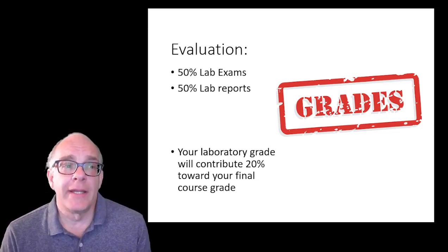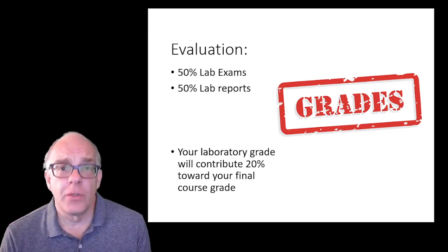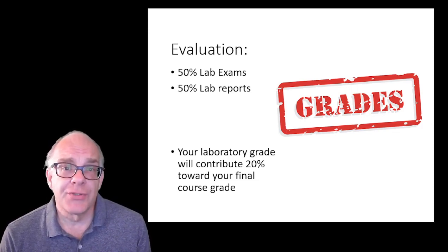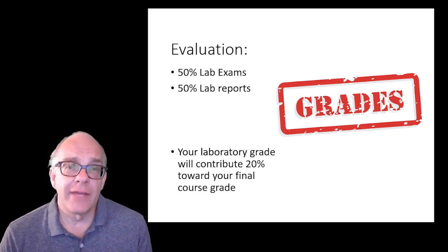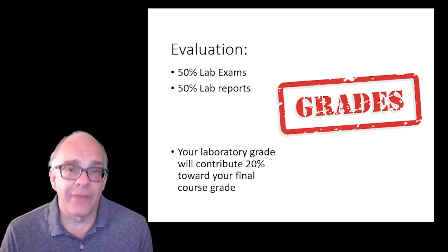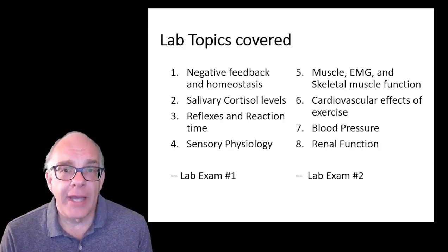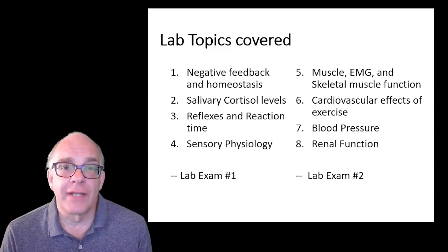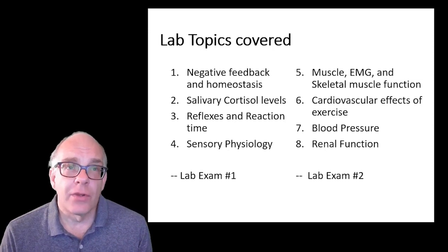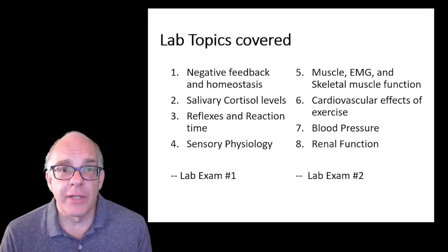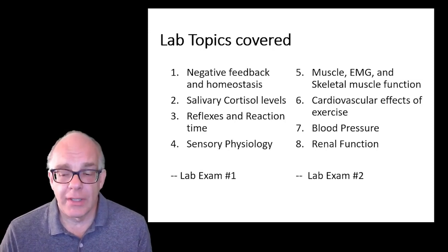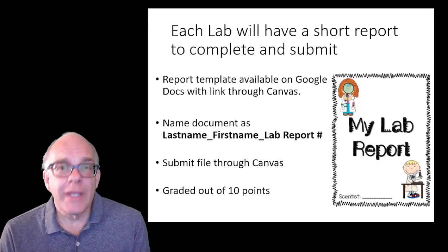In terms of evaluation, the lab grade is going to contribute 20% towards the final grade in Human Physiology, with 80% for the lecture — the lecture exams and the final exam. Within that 20% lab portion: 50% will be lab exams and 50% lab reports. The two lab exams will carry the same weight as the eight laboratory reports you'll be preparing after each weekly lab activity. Topics covered start next week with negative feedback and homeostasis and salivary cortisol levels, then reflexes or reaction time and sensory physiology — those four labs covered on Lab Exam 1. The remaining four labs — muscle EMG and skeletal muscle function, cardiovascular effects of exercise, blood pressure, and renal function — will be covered on Lab Exam 2.